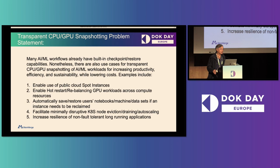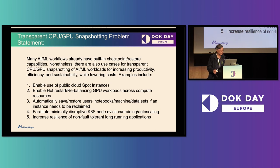During normal operations in Kubernetes, people experience evictions — node evictions or pod evictions. People need to drain nodes, and people want to run auto scaling. So we wanted to build an operator that can work with those existing capabilities. There are also a lot of people trying to introduce batch jobs or long-running, not-so-fault-tolerant applications, and snapshotting will increase their resilience.